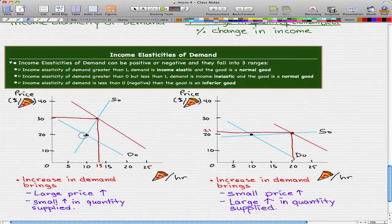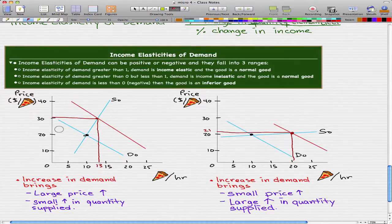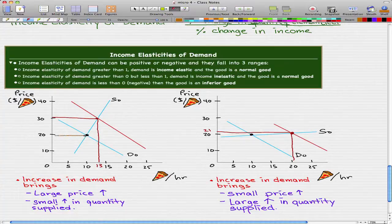So let's assume that there's an increase in demand. Well when there's an increase in demand, that could bring either one of these two situations. So it could bring, in this situation, it could bring a large price increase. So back in our original line, our original intersection, it was 20, the price of a pizza was $20 and the quantity demanded was 10 pizzas per hour.